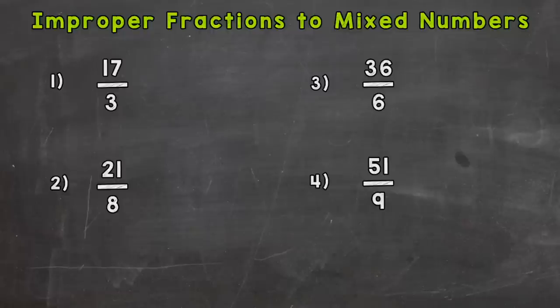An improper fraction is a fraction where the numerator is greater than the denominator and a mixed number is a whole number mixed with a fraction. So as you can see there are four problems on your screen, four improper fractions. We're going to take all four of those and convert them to mixed numbers.